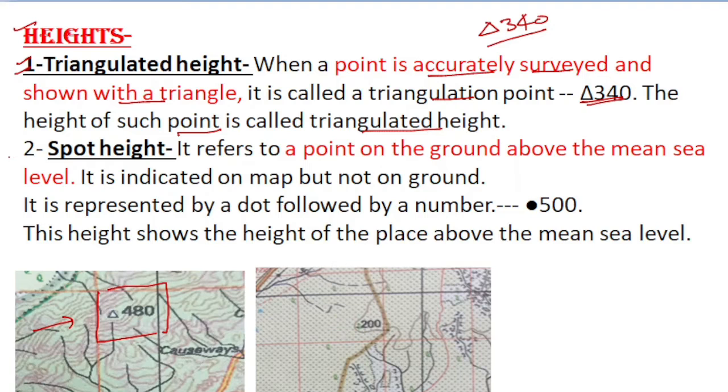Next is the spot height. It refers to a point on the ground above the mean sea level. The important words here are above mean sea level. It is indicated on the map but not on the ground.